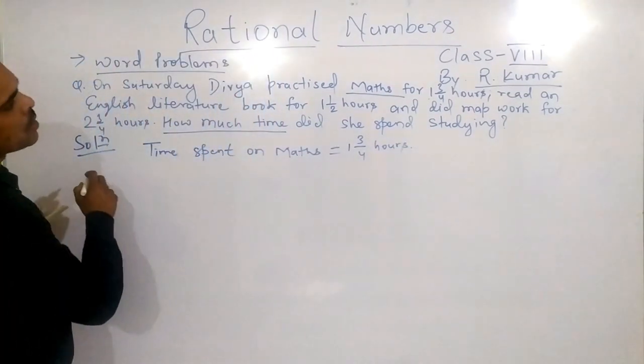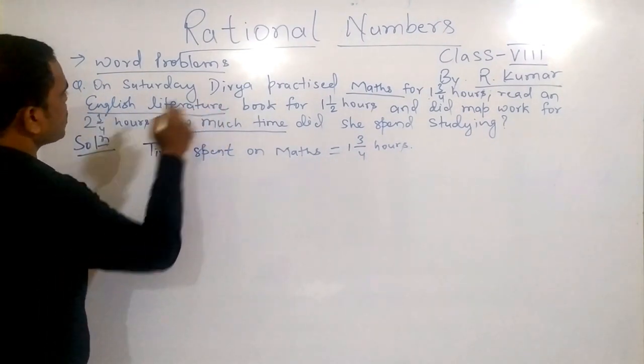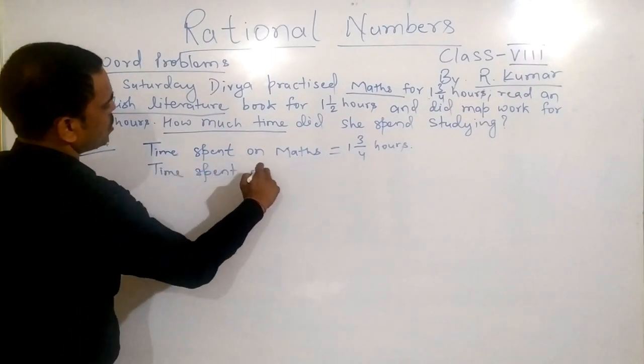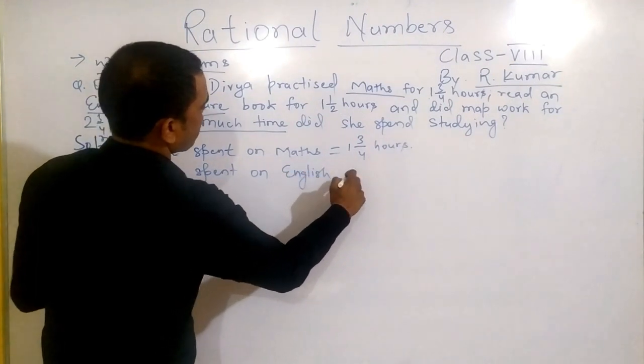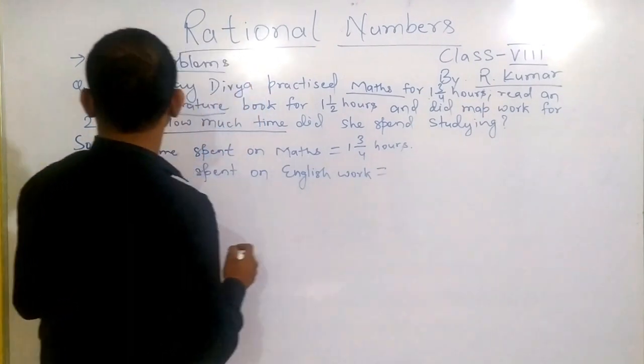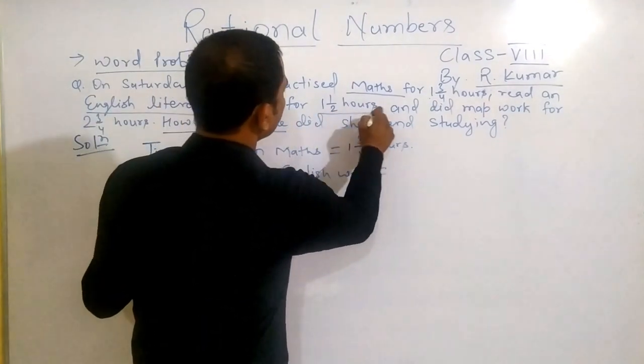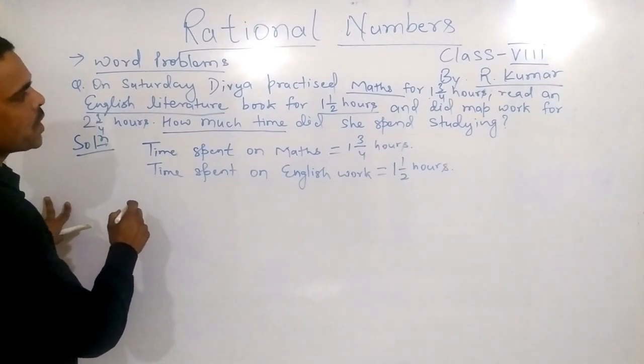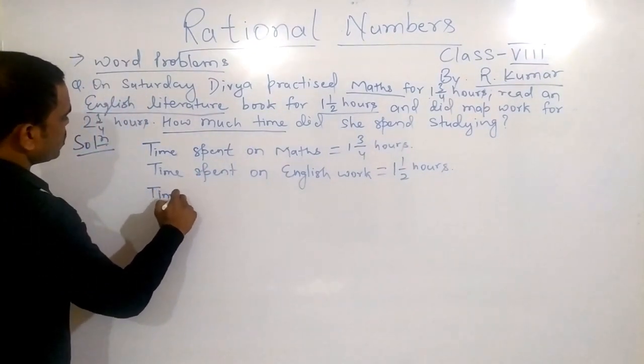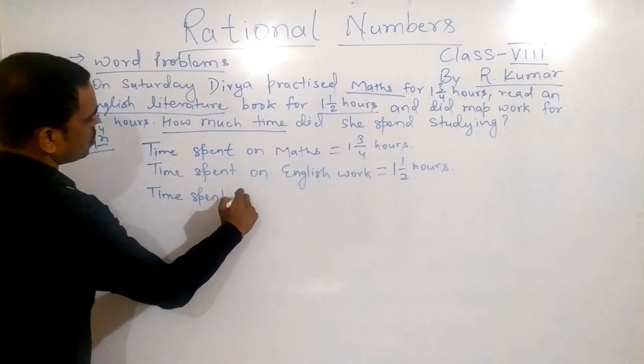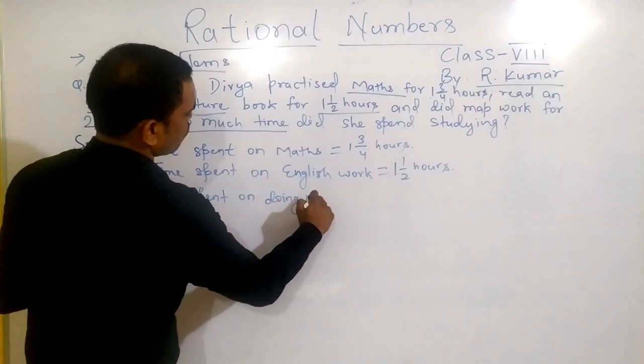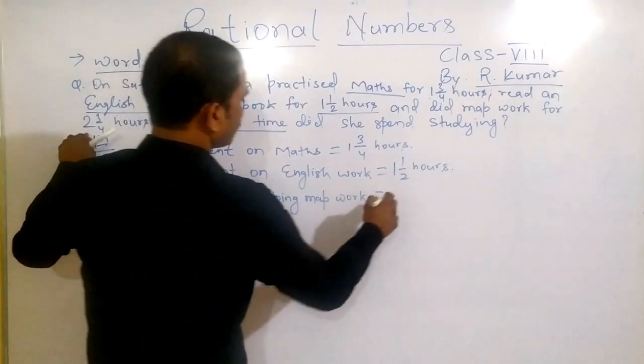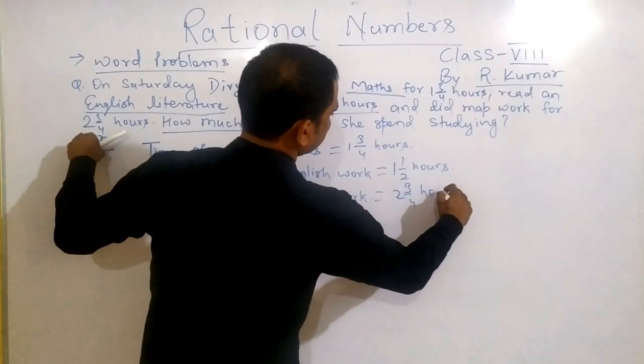So first, time spent on math is 1 whole 3 by 4 hours. Next, time spent on English work is 1 whole 1 by 2 hours. And time spent on doing math work is 2 whole 3 by 4 hours.